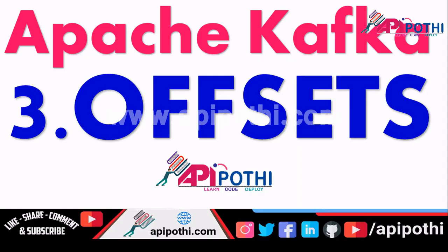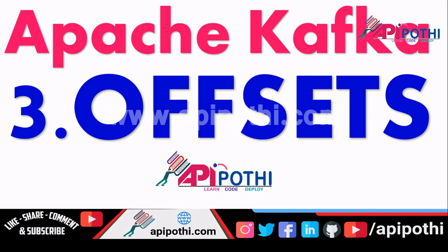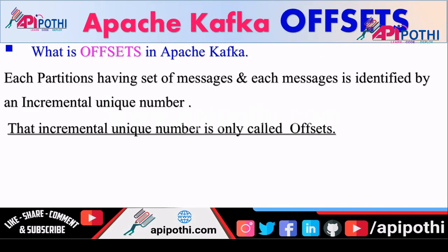Hello everyone, thanks for watching this video. In this video today we are going to understand what is the offset in Apache Kafka. This is the third video; in the last two videos we already understood what Kafka is at a high level and what a topic is in detail. This video is talking about only the offset value in Apache Kafka. The offset value is nothing but a unique incremental number. With the help of this number we can access the message from the topic. Your topic has many partitions, each partition contains some data, and that data is identified with a unique number — that unique number is called offset.